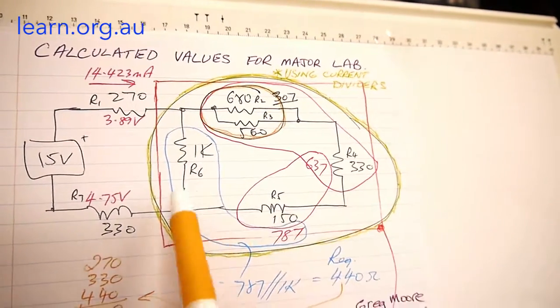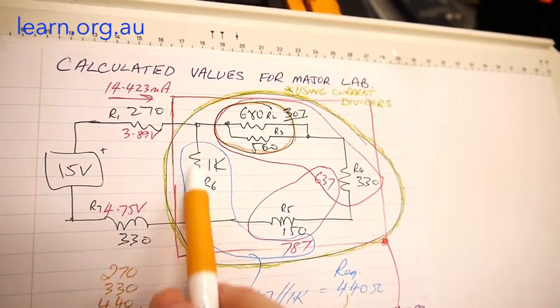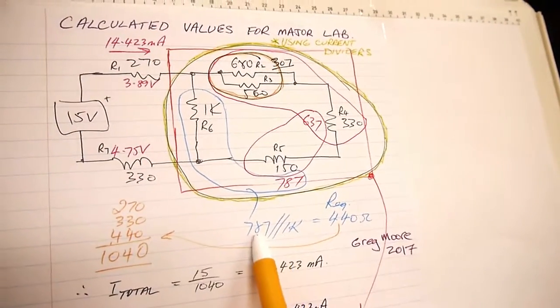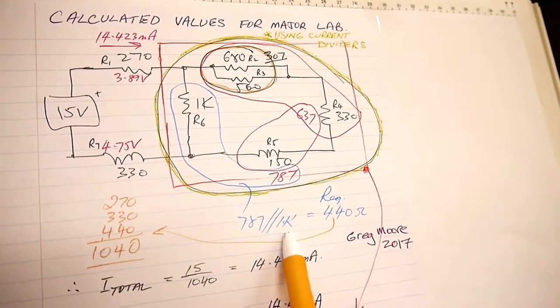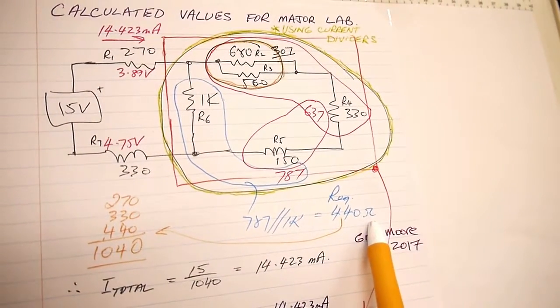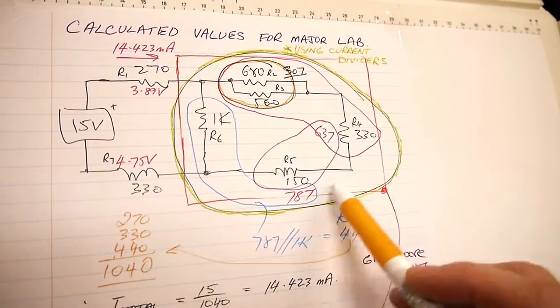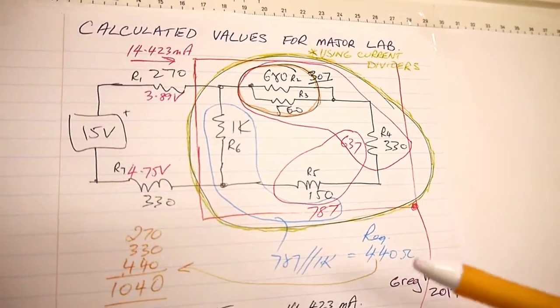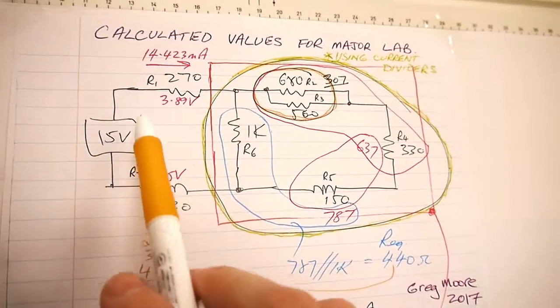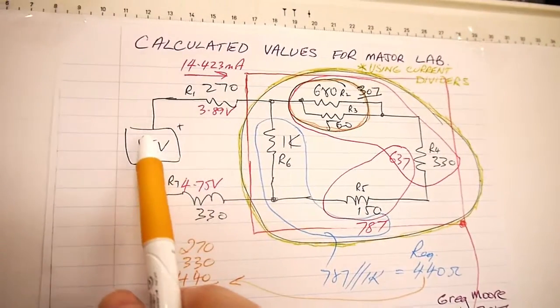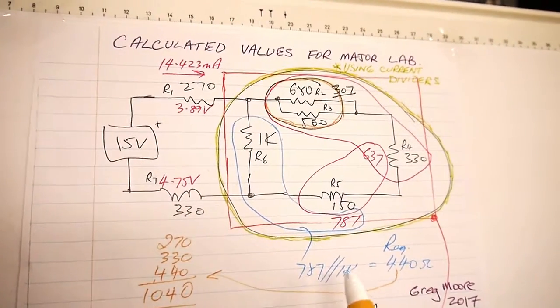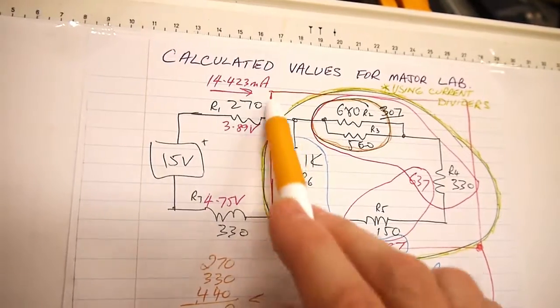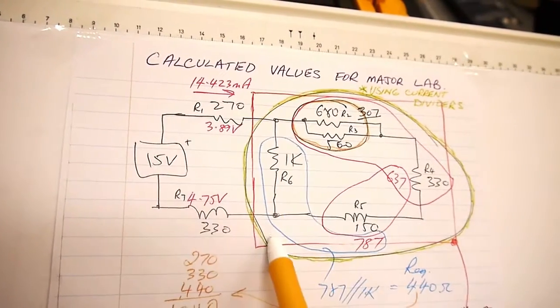I've looped that 637 with 150 ohms to give me 787 ohms. So 787 represents these resistances. Then we've got 1k in parallel with that 787, giving me an REQ of 440 ohms in this red box area. Before we can do anything much with this circuit we have to find the total current.